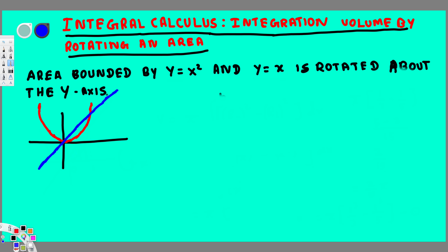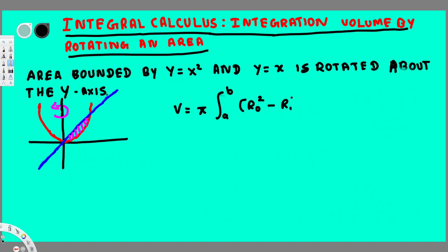The question is asking to find what the volume will be if we rotate this region around the y-axis. To find this, we can use the cross-section method — the cylindrical shell method. The volume equation is: π times the integral from a to b of (radius_out² minus radius_in²) dy. If you rotate around the y-axis that's dy; if you rotate around the x-axis it's dx.